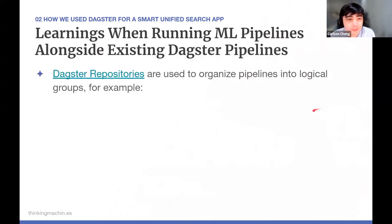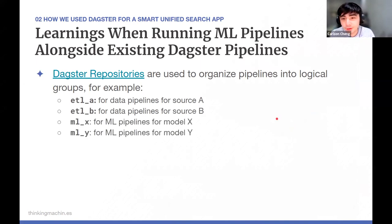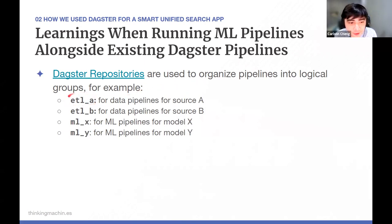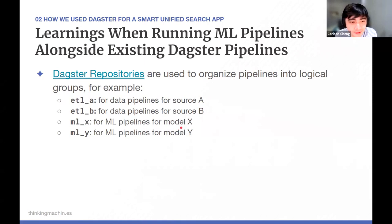Some learnings from running ML pipelines alongside existing Dagster pipelines: when porting Jupyter notebooks into standard ML pipelines, we already have an existing Dagster infrastructure for traditional ETL and ELT. We don't need a new platform — we just extend our existing Dagster infrastructure and add ML pipelines. One key thing is to organize pipelines into logical groups, for example groups for ETL pipelines for source A and source B, and other groups for ML pipelines for specific models.